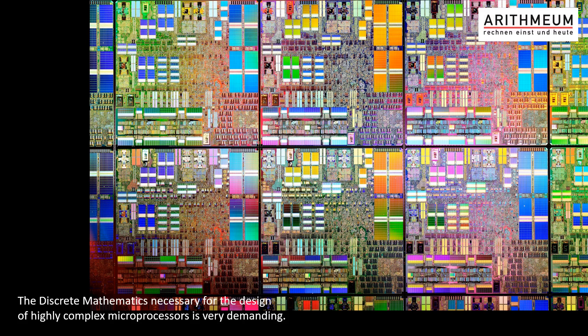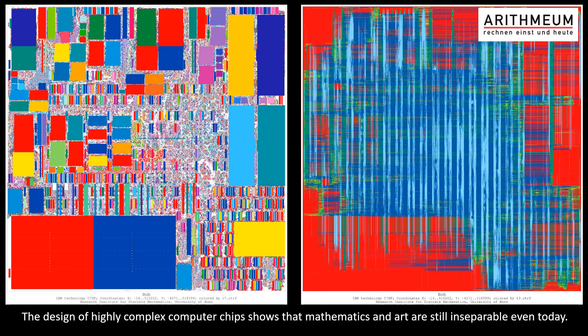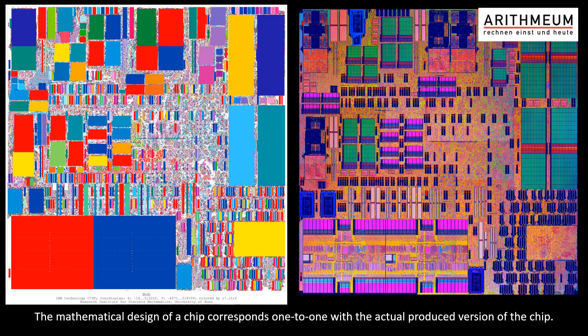Modern microprocessors are the most complex objects mankind has ever invented or manufactured. Here we can see the design pictures of these microprocessors. The coloring shows the aesthetics of the structures in a very pleasant way. The picture on the left shows the design of the placement — that is, the positioning of the functional elements on a chip. The picture on the right shows the placement layer of the actual chip. Every element from the design can be found there one to one.